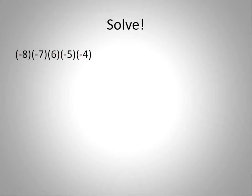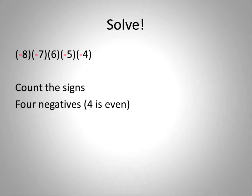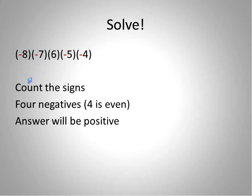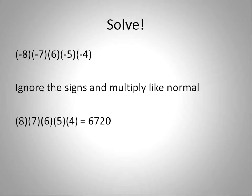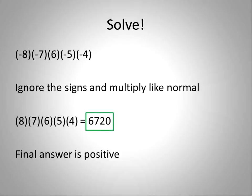Now let's actually solve a problem. First, count the negative signs: one, two, three, four. Four is even, so my final answer will be positive. I don't have to track the sign through every step. I just ignore the signs and multiply normally using my calculator: 8 times 7 times 6 times 5 times 4 equals 6,720. My final answer is positive 6,720.